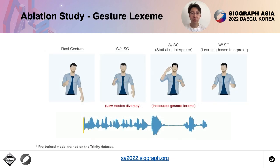From the objective results mentioned before, we know that the gesture lexeme is important to achieve quality motions. This demo shows the comparison of the system without gesture lexeme, the gesture lexeme predicted by the statistical method where lexemes are selected based on frequencies in the training dataset, and the lexeme predicted by our learning-based interpreter.